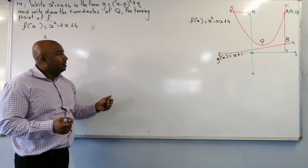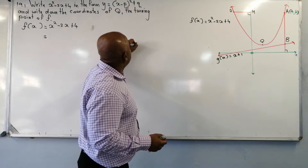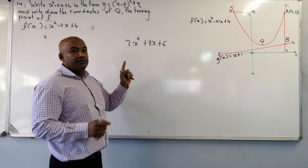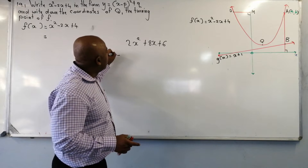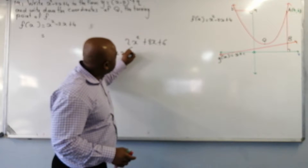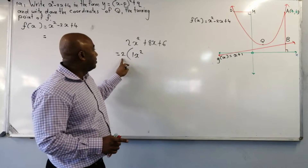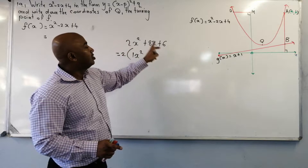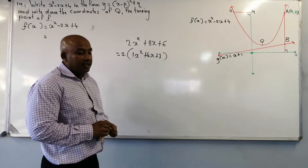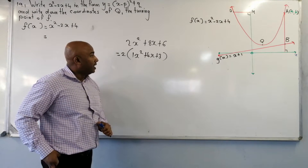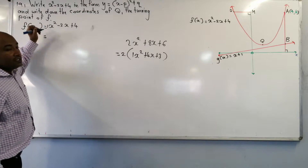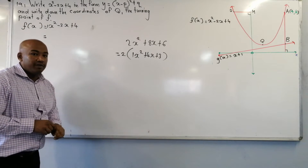If it was not a positive one — for example, 2x squared plus 8x plus 6 — then what you would do is take out a common factor. When you take out 2, the coefficient becomes a positive one. Remember, you take out 2 from all terms, giving you plus 4x plus 3, and then you continue from there. But in our example, the coefficient of x squared is already a positive one, so we do not need to take out any common factor.